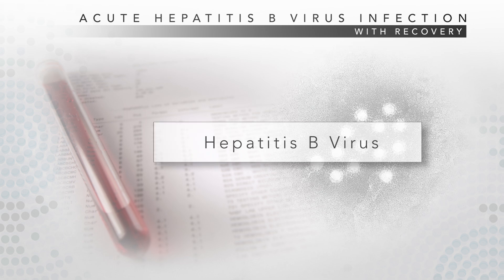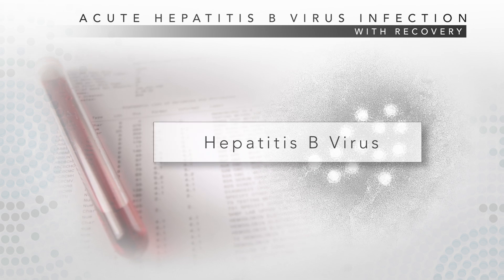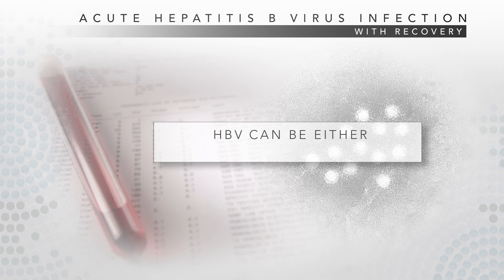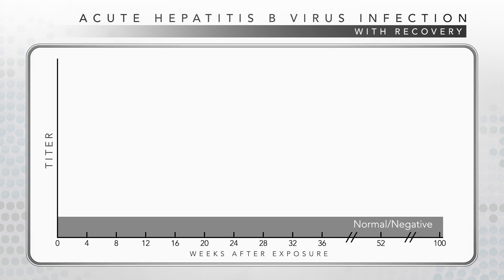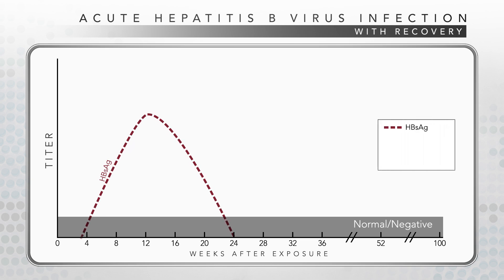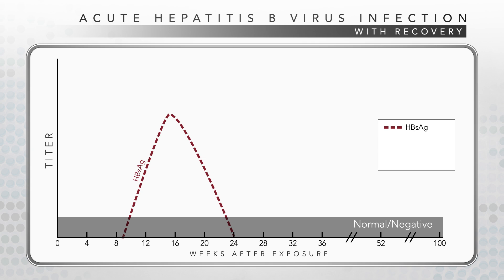Liver disease caused by the Hepatitis B virus, referred to as HBV, can be either acute or chronic. The first serologic marker to appear in someone infected following exposure to HBV is Hepatitis B surface antigen, referred to as HBsAg. HBsAg, shown by the red hatch line, can be detected on average one month after exposure to the virus, but can range from as early as one week to nine weeks after exposure, and may precede the onset of symptoms by one to two months.